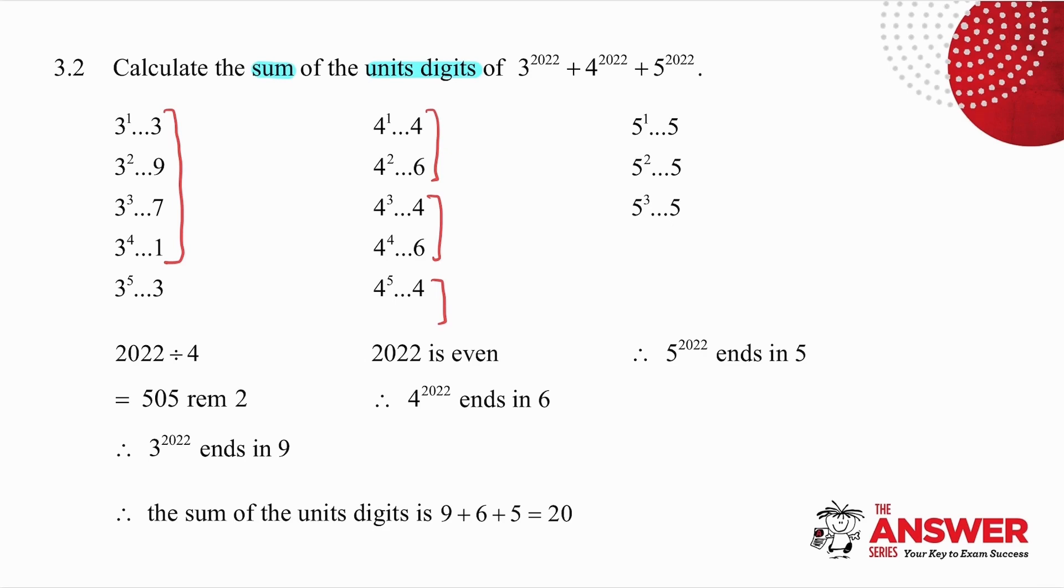They asked me for the sum of the units digits. So, this one ends in 9, this ends in 6, this ends in 5. The sum of the units digits is 20.